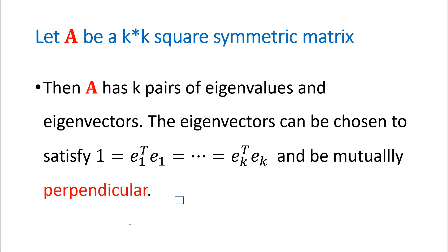So let's say A is equal to k by k square symmetric matrix. Then A has k pairs of eigenvalues and eigenvectors. The eigenvectors can be chosen to satisfy this condition. And it's also mutually perpendicular.